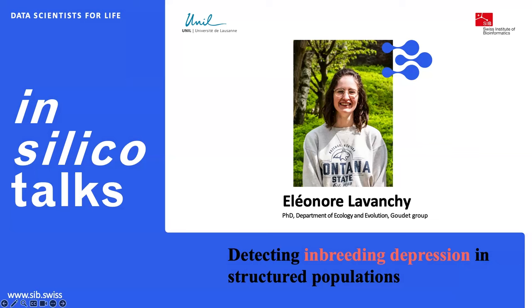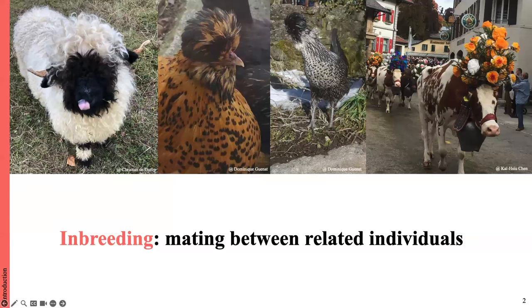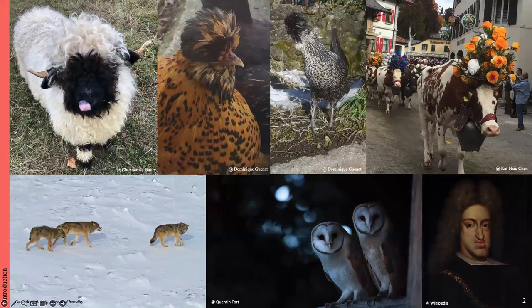But first, I want to start with an introduction which summarizes all the important concepts you need to understand either this talk or the paper. Inbreeding is defined as mating between related individuals and is actually quite common. It's heavily present in domestic species, but it also exists in the wild, especially true nowadays with the increase of habitat loss and the diversity crisis we are facing.